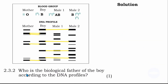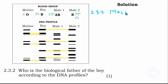The next question asks: who is the biological father of the boy according to the DNA profile? As I showed you with the lines drawn using a ruler, the remaining bands match with male 2. So the biological father is male 2.